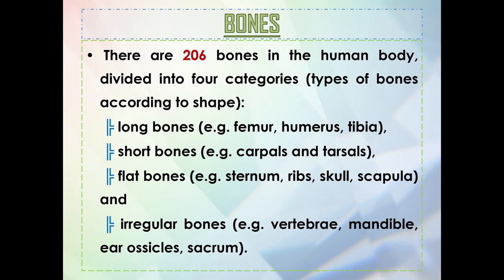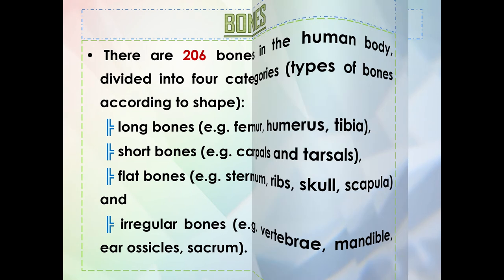These are the types of bones according to shape. For adults, we have 206 bones. For babies, they have around 300 bones, which fuse together as they grow up until they reach the adult count of 206 bones.